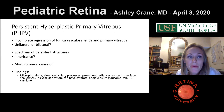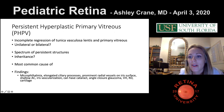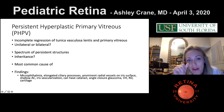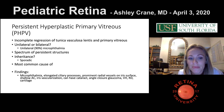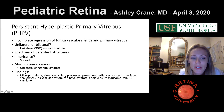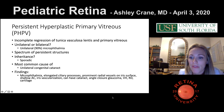PHPV — persistent hyperplastic primary vitreous — is an incomplete regression of the tunica vasculosa lentis and primary vitreous. It is unilateral and has a spectrum of persistent structures. The inheritance is sporadic. It's the most common cause of unilateral congenital cataract. On testing, they like to ask about elongated ciliary processes.